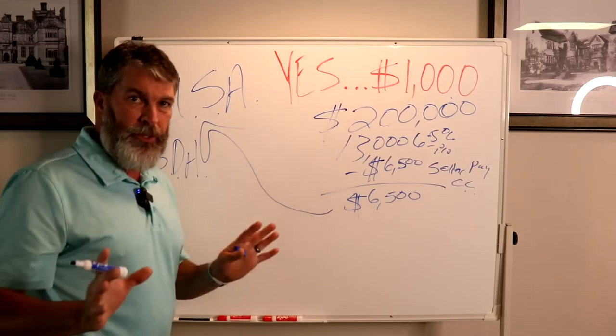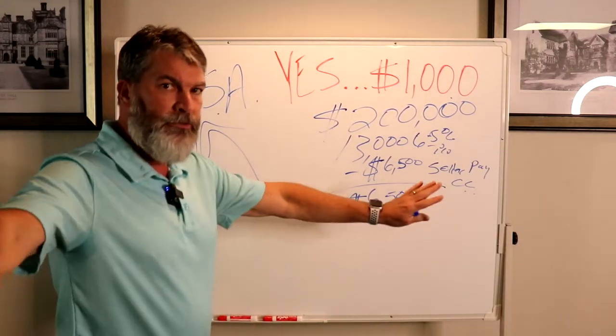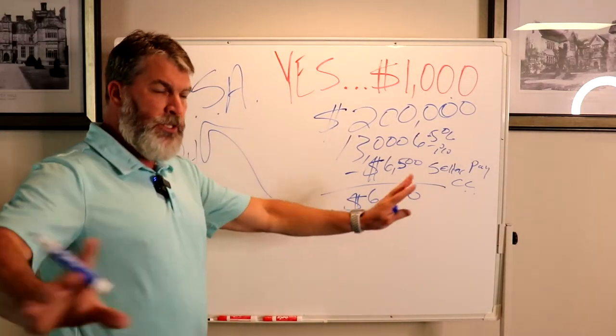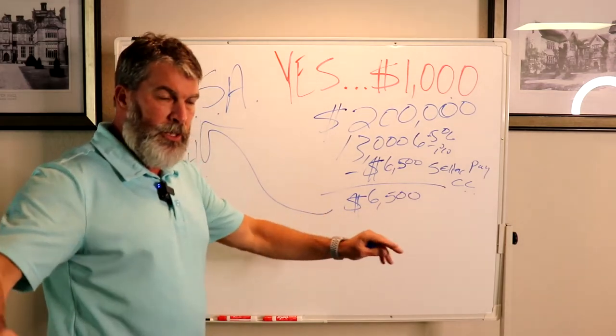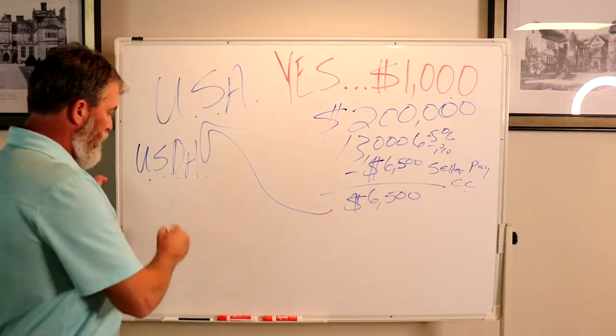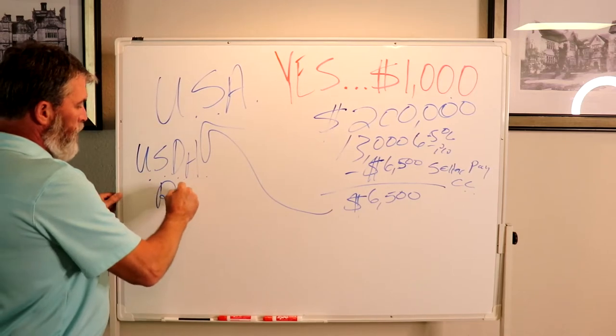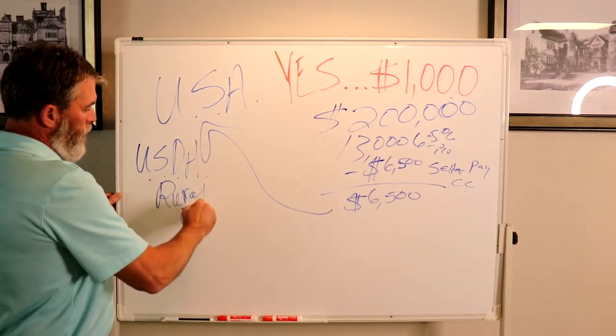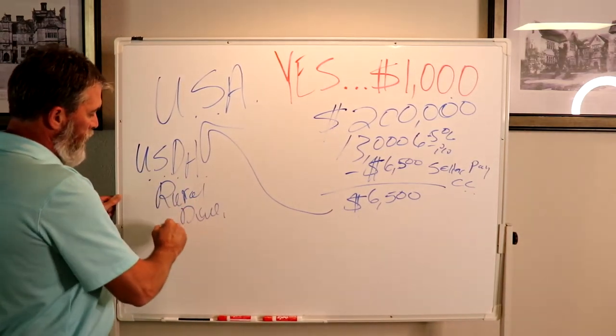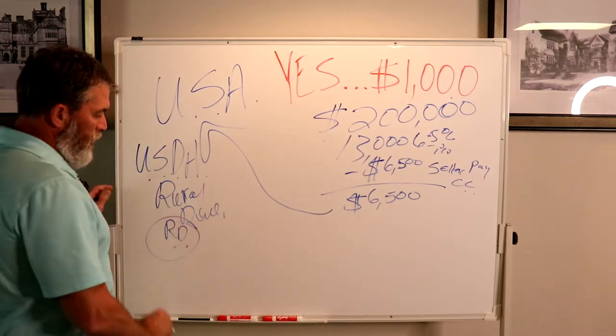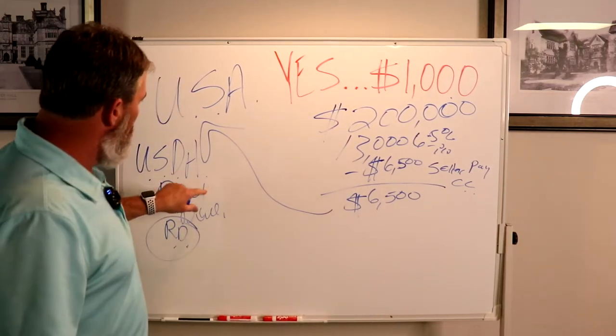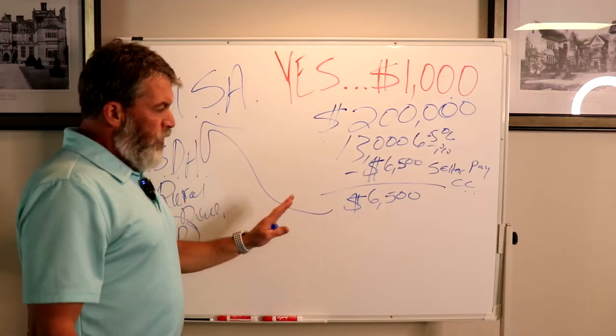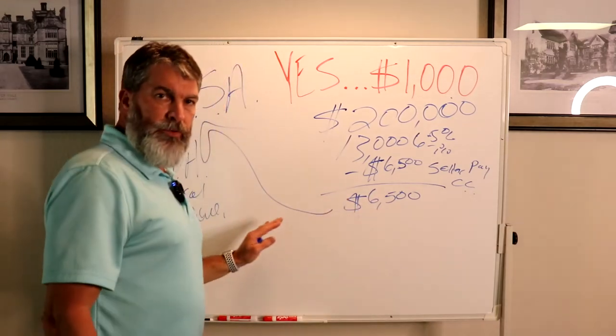And it's important to know, you do not have to live out in farm country. You can live just outside suburban areas. You can go to USDA, they call it Rural Development, RD. So you can Google RD USDA. But most importantly, if you need an agent in your area, we can find one for you.